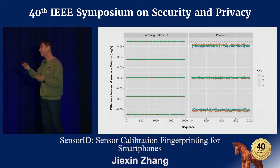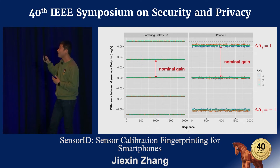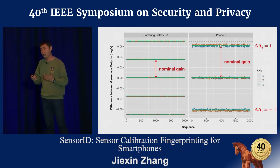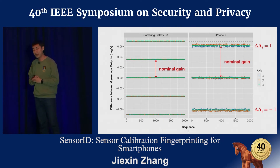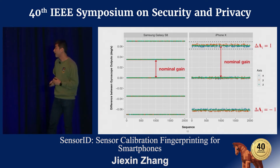Furthermore, thanks to the clear quantization, we can know the value of delta A for each data point by simply observing which quantile the point lies in. In many cases, we don't know the nominal value of the gain matrix — especially for iOS devices, where the datasheet is not publicly available. But that's not a big issue, because we can still estimate the nominal gain using the distance between adjacent quantiles, as shown on this slide.